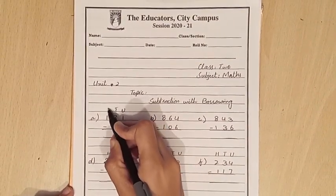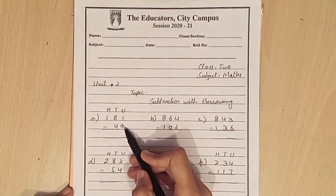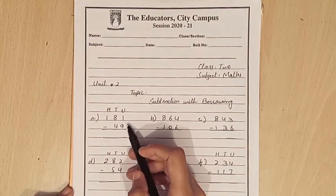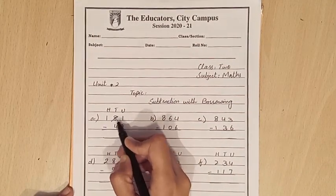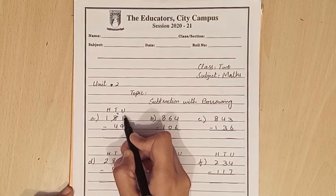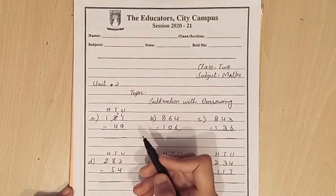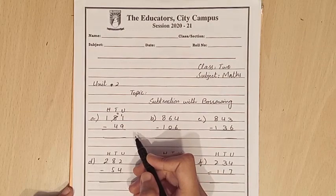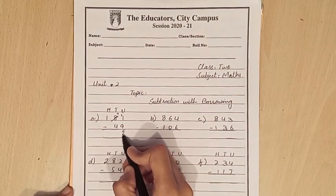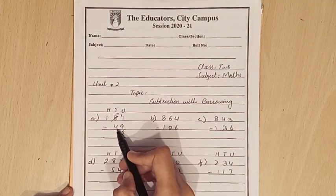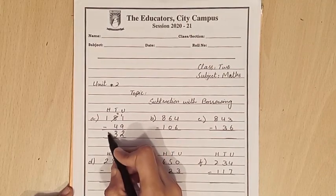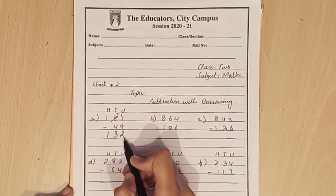Unit, 10, 100. 1 is smaller than 9, we can't subtract. What do we do? We have to borrow the number from 8. We cut the number, now it's 9. When we subtract 9 from 11, the answer will be 2. 7 minus 4 is 3. When it comes down, 132 is the answer.